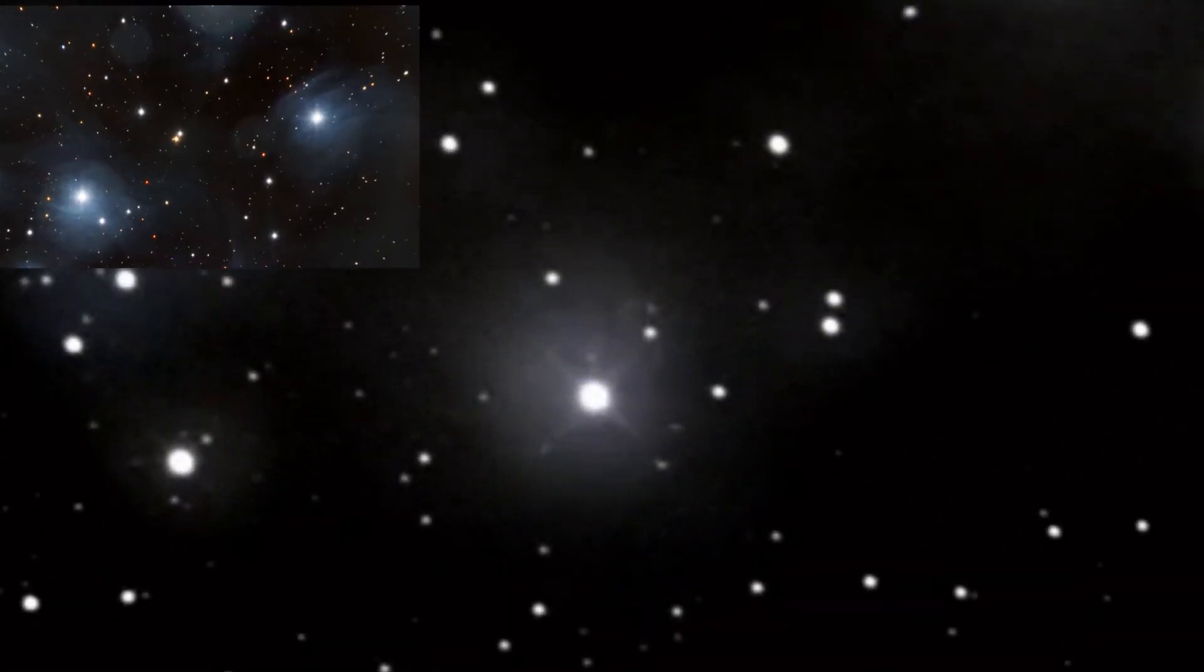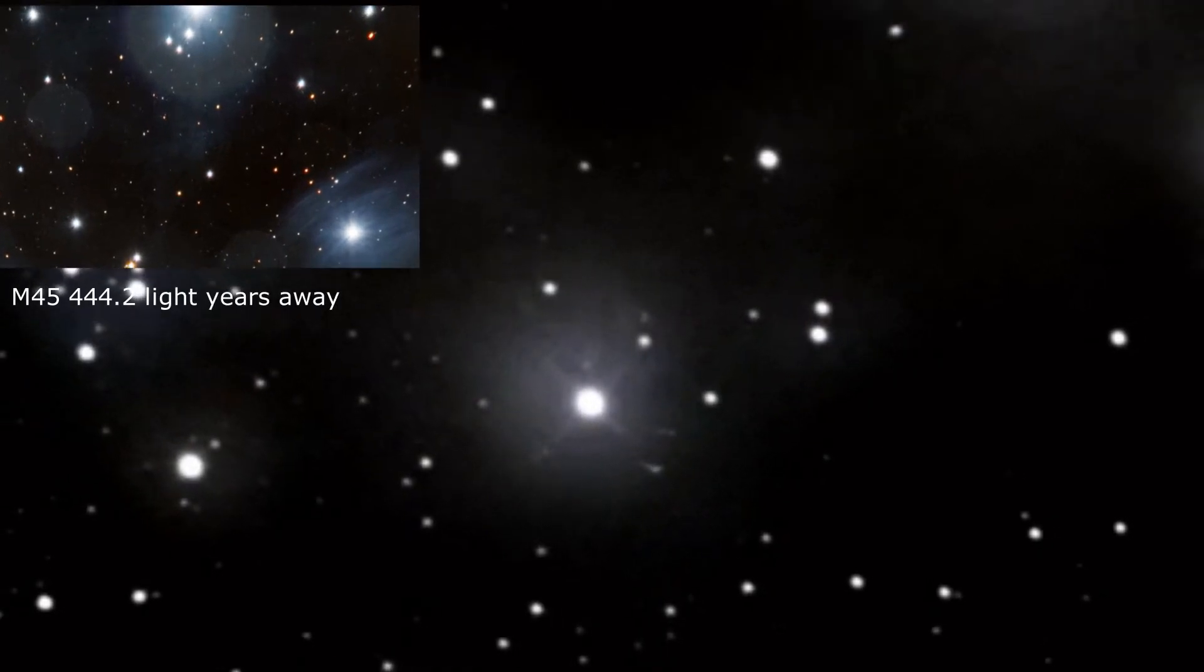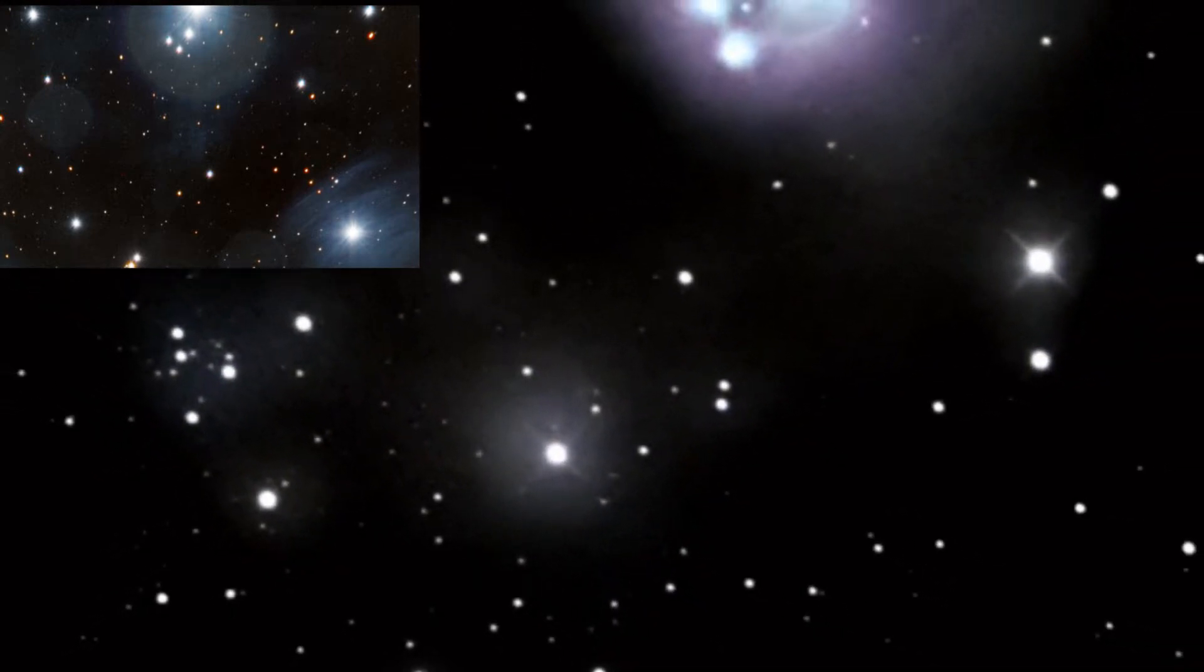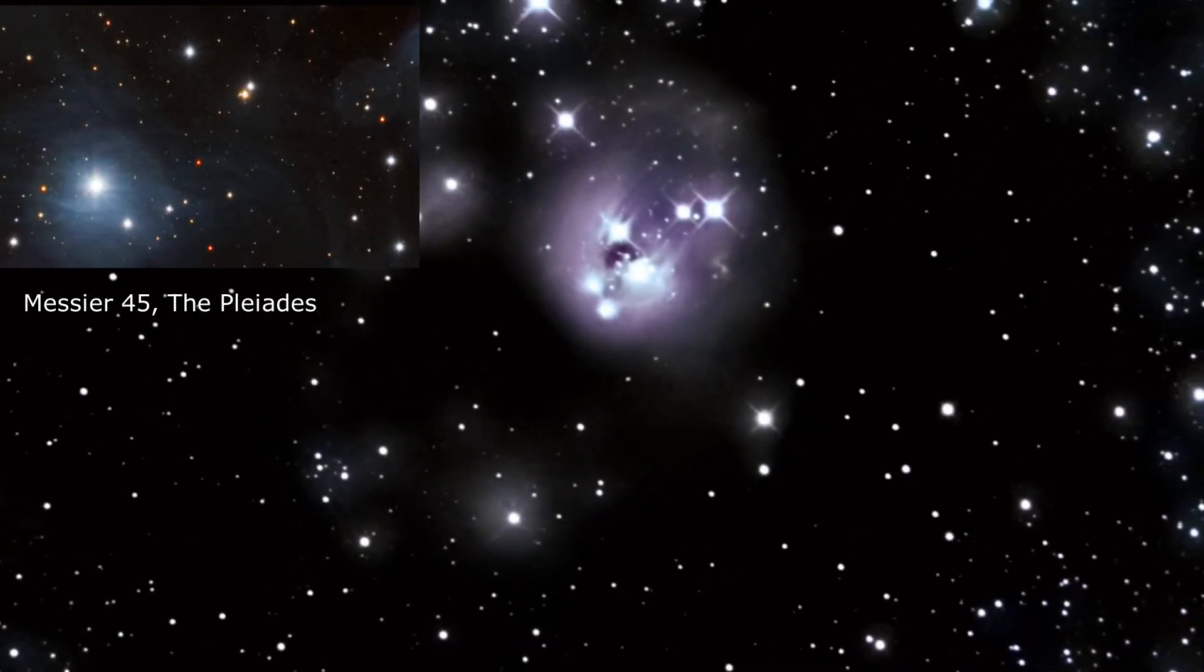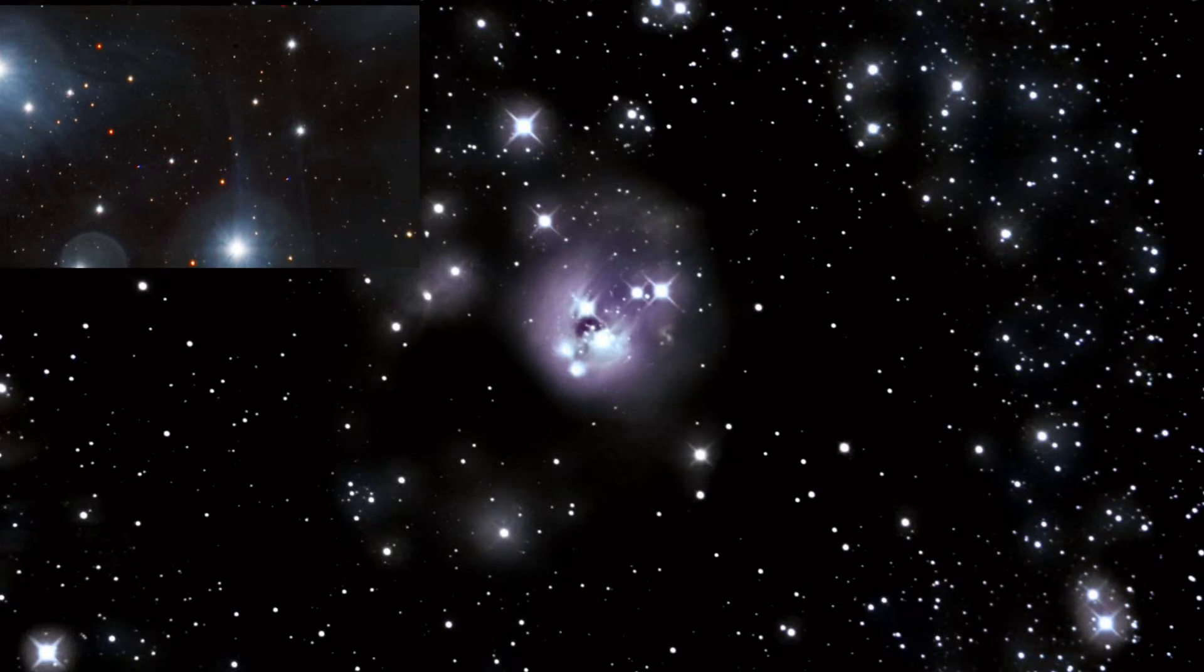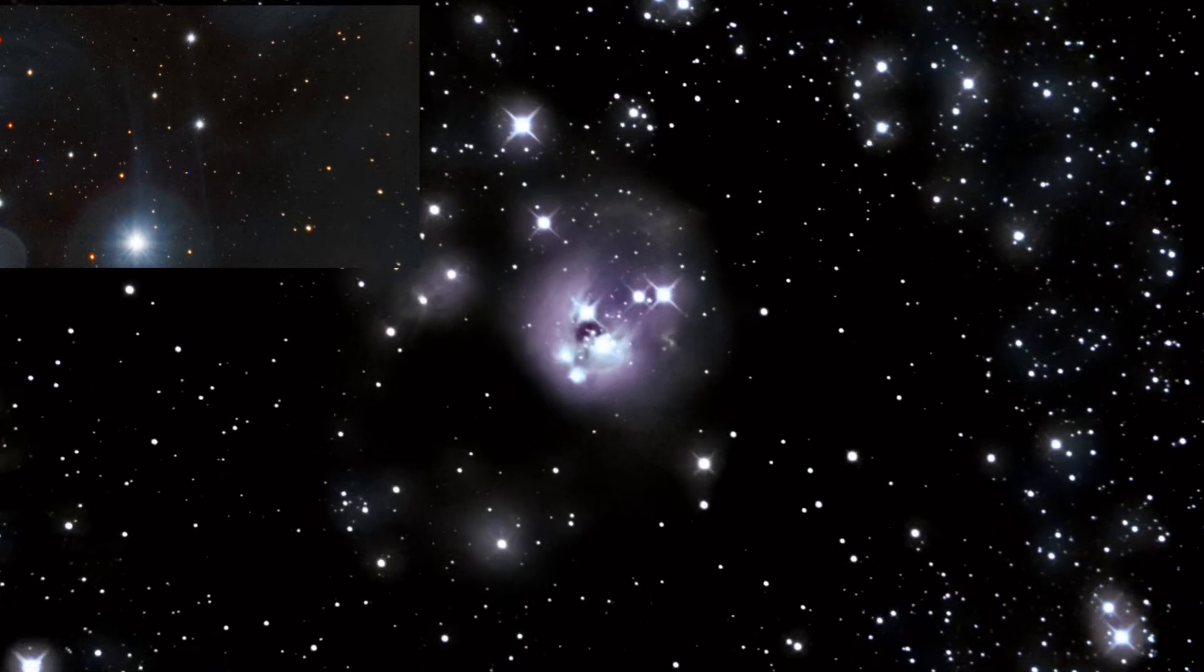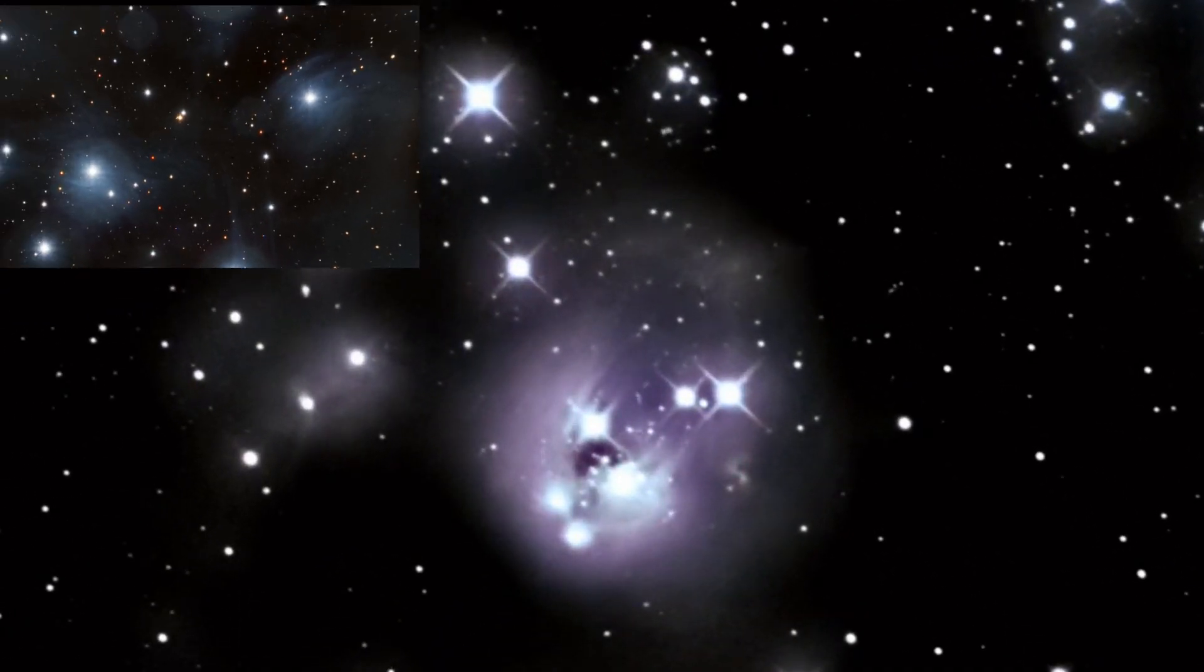In comparison to Messier 45, the Pleiades, also known as the Seven Sisters, is an open star cluster, middle-aged with hot B-type stars in the northwest of the constellation Taurus. It has a distance from Earth of 444.2 light-years. The cluster is dominated by hot, blue, and luminous stars that have formed within 100 million years.